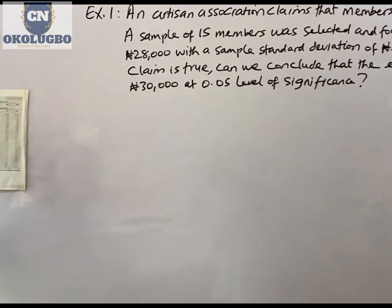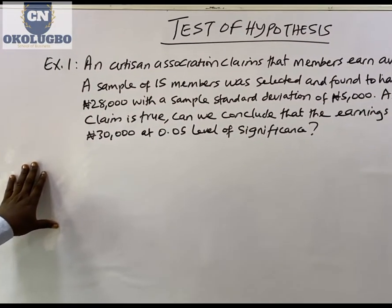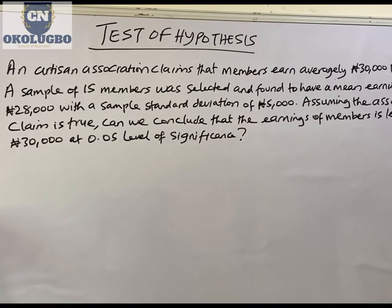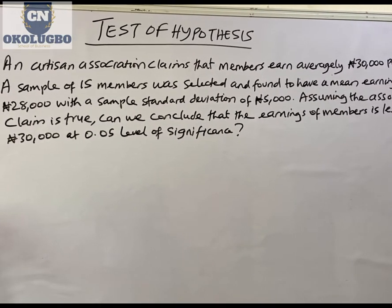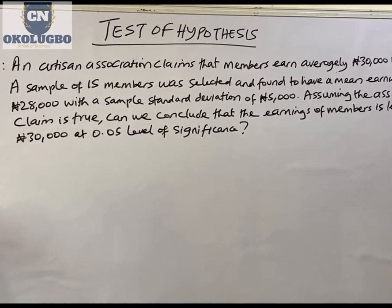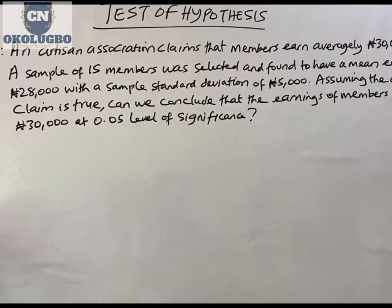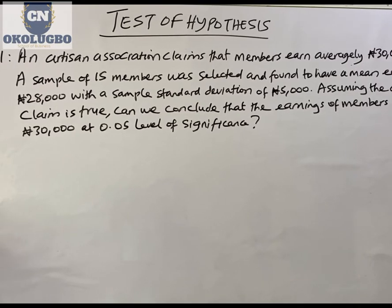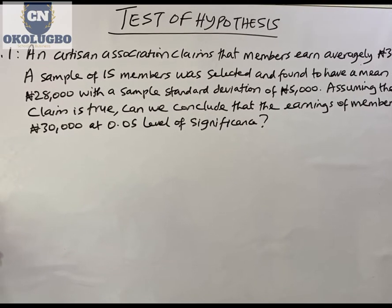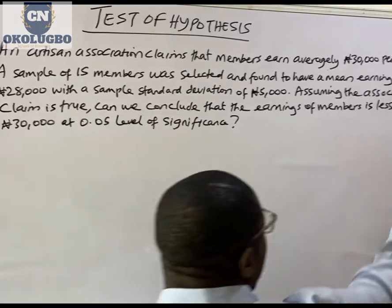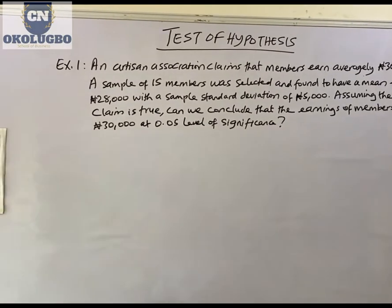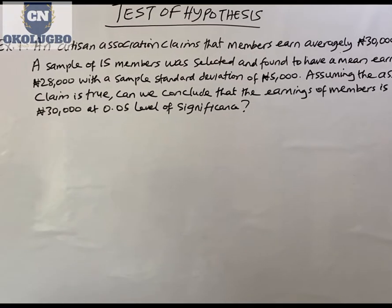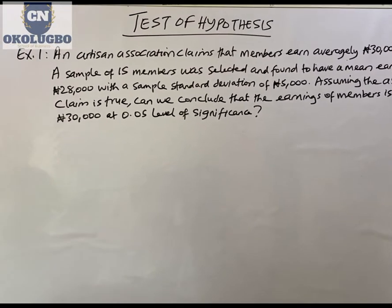What we have on the board is example one. The question is: an artisan association claims that members earn an average of 30,000 Naira per week. A sample of 15 members was selected and found to have a mean earning of 28,000 Naira with a sample standard deviation of 5,000 Naira. Assuming the association's claim is true, can we conclude that the earnings of members is less than 30,000 at 0.05 level of significance?